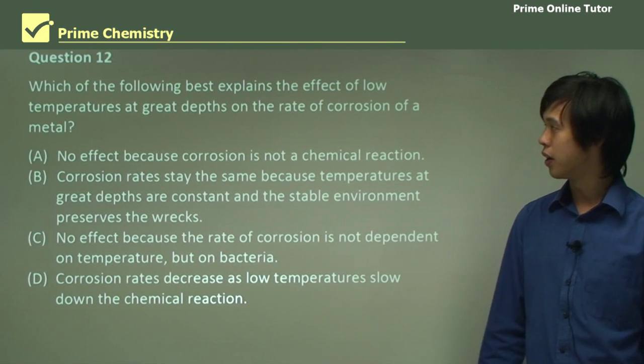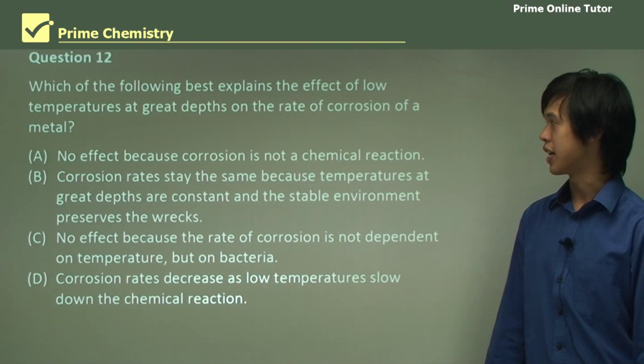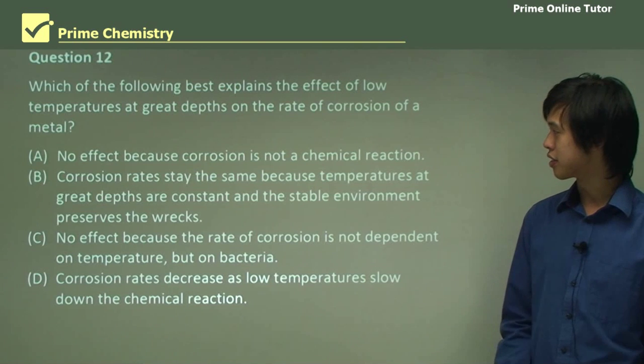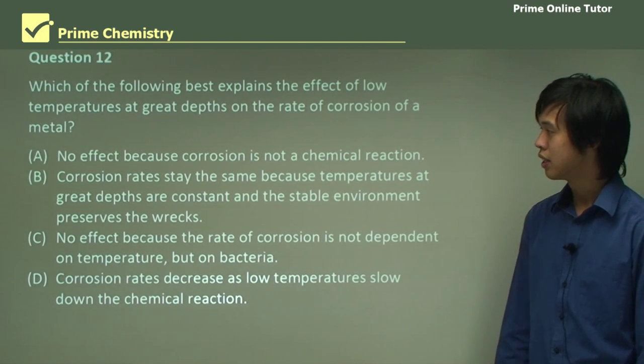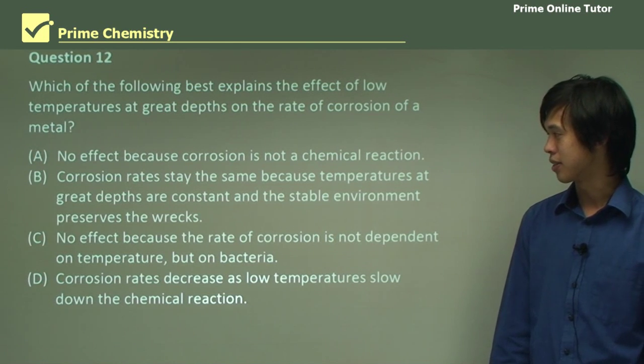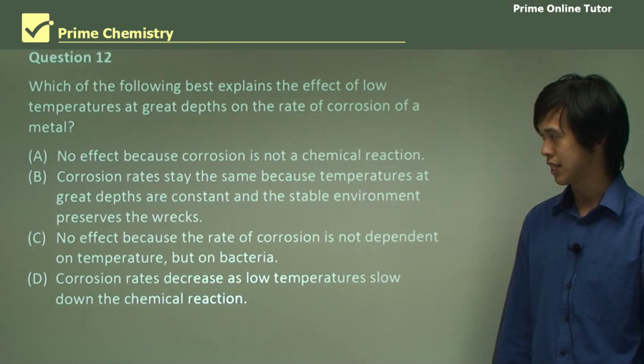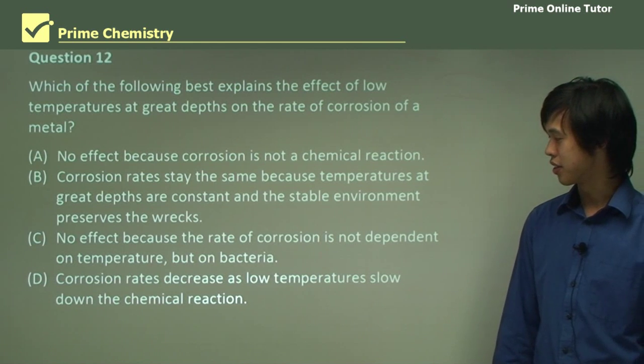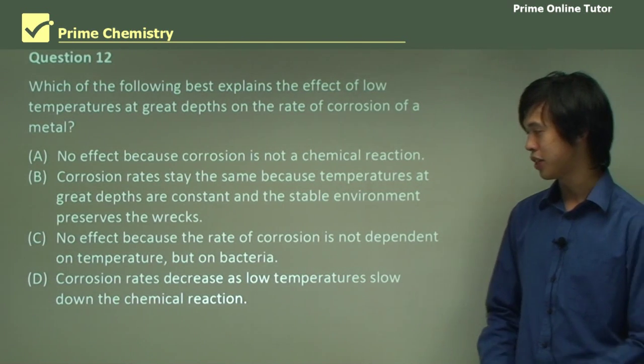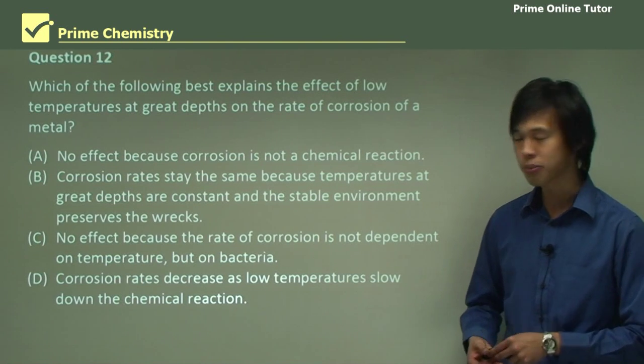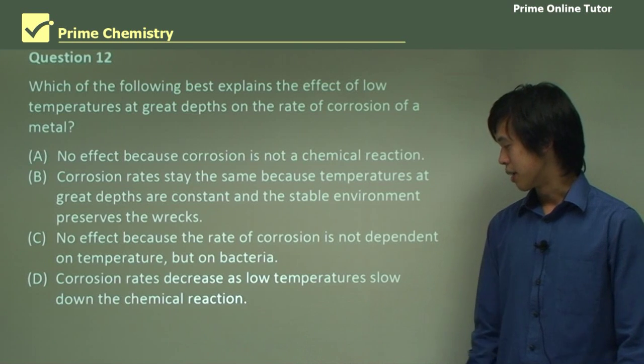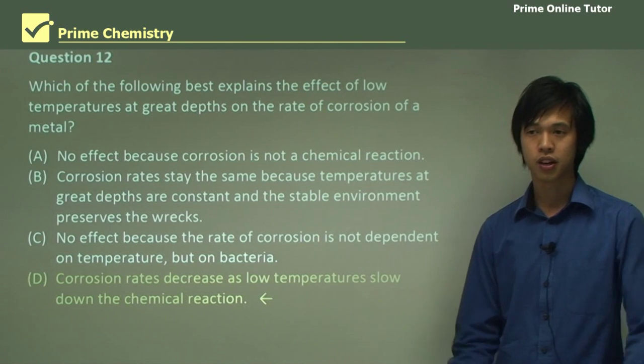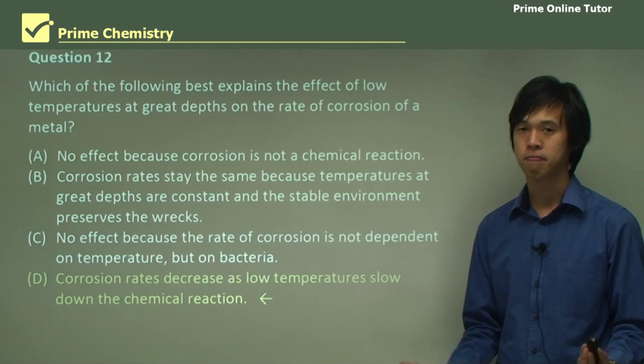So question 12, which of the following best explains the effect of low temperatures at great depths on the rate of corrosion of a metal? So the first one is no effect because corrosion is not a chemical reaction, so that's probably not true. Corrosion rates stay the same because the temperatures at great depths are constant and the stable environment preserves the wrecks. Probably not. No effect because the rate of corrosion is not dependent on temperature but on bacteria. Again, that's not 100% correct. So corrosion rates decrease as low temperatures slow down. The chemical reaction is likely to be the answer, and there it is. Because there's lower energy available, there's lower reaction rate. Simple as that.